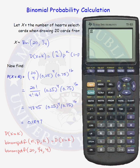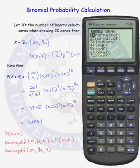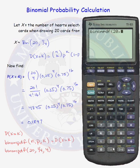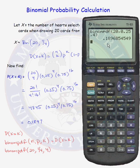On the TI calculator, go to 2nd VARS and go down to binomPDF, number 10. We give it parameters 20, 0.25, 4, close with the parentheses, and hit Enter. We see that the probability that X equals 4 for a binomial(20, 0.25) random variable is equal to almost 19%.